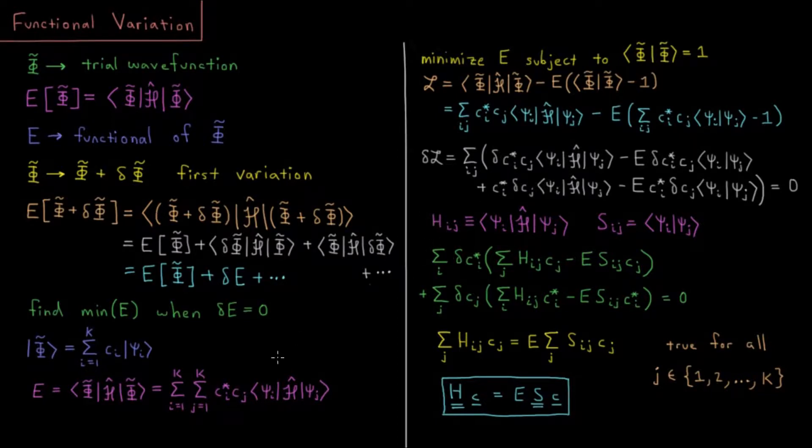Then we can define the matrix H, where we're going to define all of these matrix elements psi_i H psi_j. And we're going to find the overlap matrix S, where its elements S_ij are the overlap integral of basis function i and basis function j.